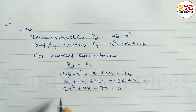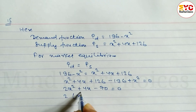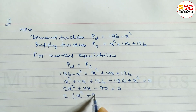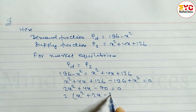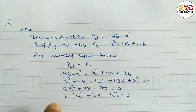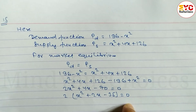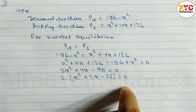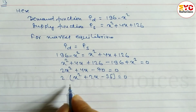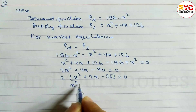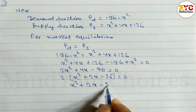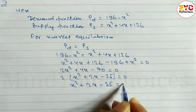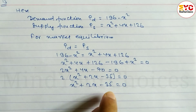We can take 2 as a common factor: 2(x squared plus 2x minus 35) equals 0. Dividing both sides by 2, since 0 divided by 2 is 0, we get: x squared plus 2x minus 35 is equal to 0.